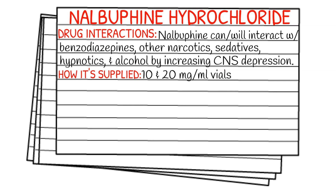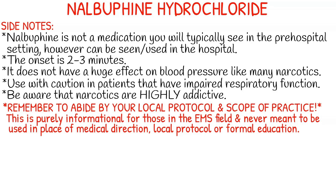It is typically supplied in a 10 or 20 mg vial. As mentioned earlier, it's not usually a medication you'll see in the pre-hospital setting, but it can be seen in the hospital itself. The onset is 2-3 minutes. It does not have a huge effect on blood pressure like many narcotics do, and that could be because of the dual antagonizing and agonizing effects. Use with caution in patients that have impaired respiratory function.